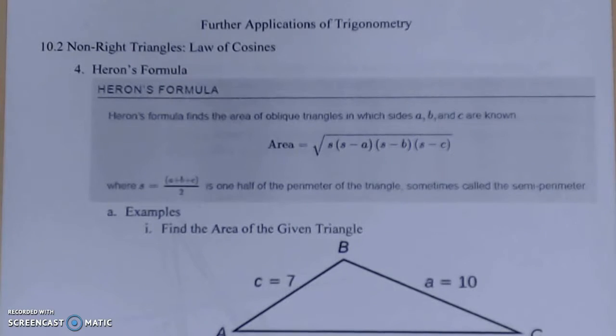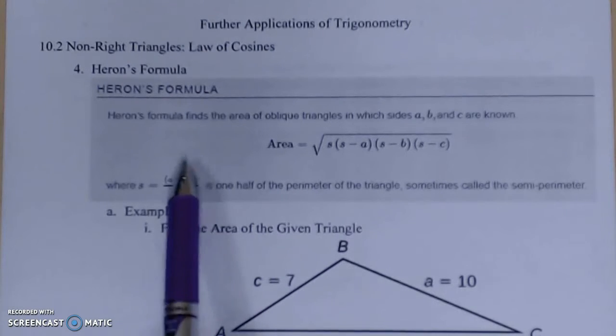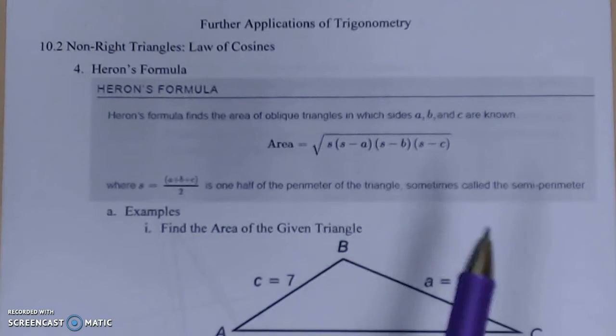This one is really great because we have done area formulas dealing with angles. This one, you only have to know the sides to compute. It does bring in a new variable s, known as the semi-perimeter. s equals all the sides added and divided by two, so it's one half of the perimeter of the triangle.